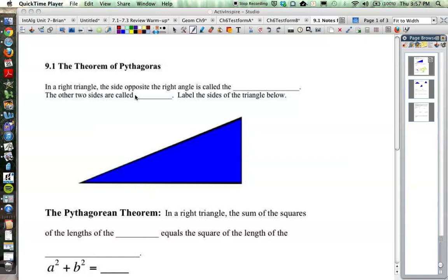So let's take a look at the right triangle right here. In a right triangle, the side opposite the right angle is called the hypotenuse, and the other two sides are called legs.